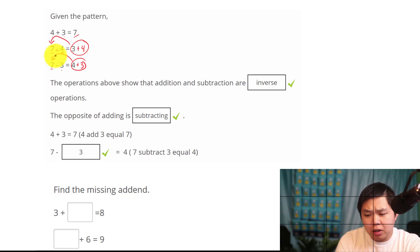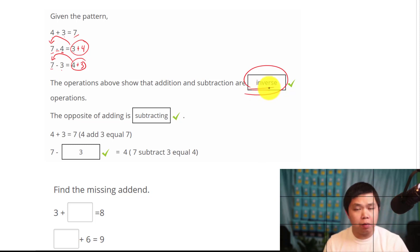And the better term to use instead of opposite is inverse. That means, and we are going to look at the definition of inverse very carefully with more examples. Going back to the same concept, 3 plus 4 equal to 7, which is equal to 4 plus 3 equal to 7. So it doesn't matter if 3 and 4 go first.